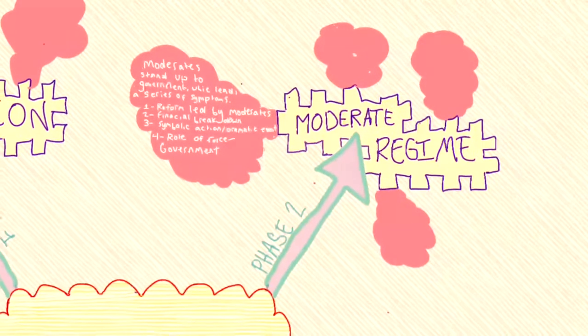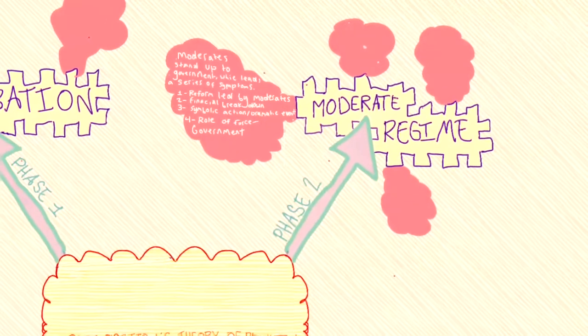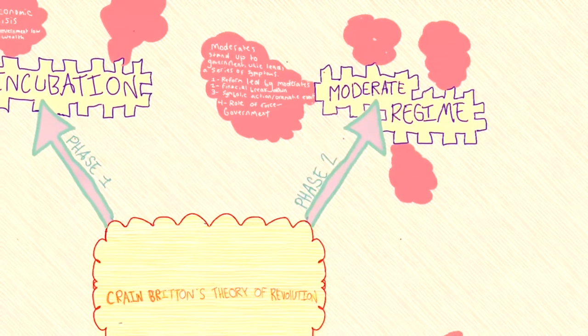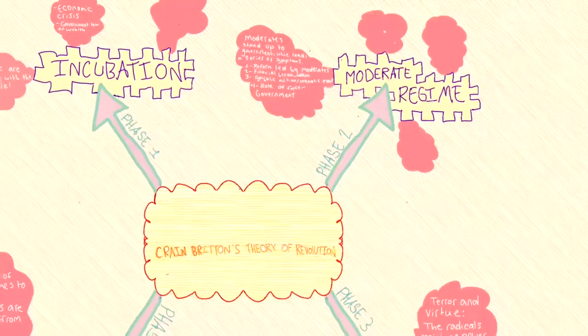The next phase is the moderate regime, where the moderates stand up to the government. In our machine, this is represented by the government official marble falling down, hitting the moderates, which also hit off other soldiers of the government.